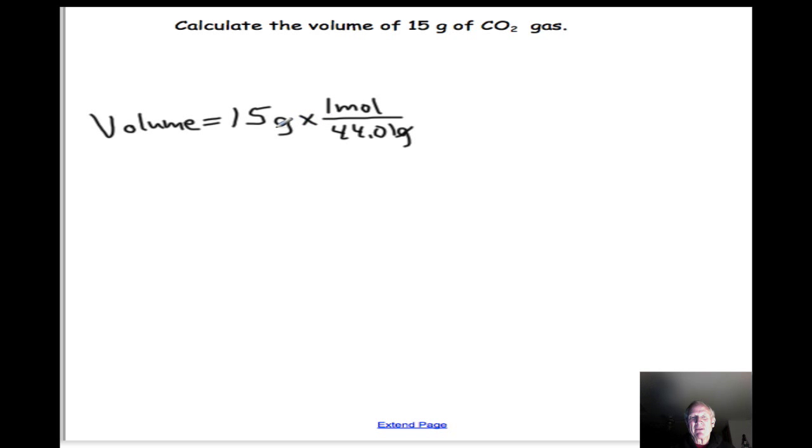At this point, we've solved for moles, but we're still looking for volume. Our second conversion factor puts volume on top, 22.4 liters, and on the bottom, 1 mole. The moles cancel, we're left with liters. 15 divided by 44.01 times 22.4 gives us an answer of 7.63 liters.